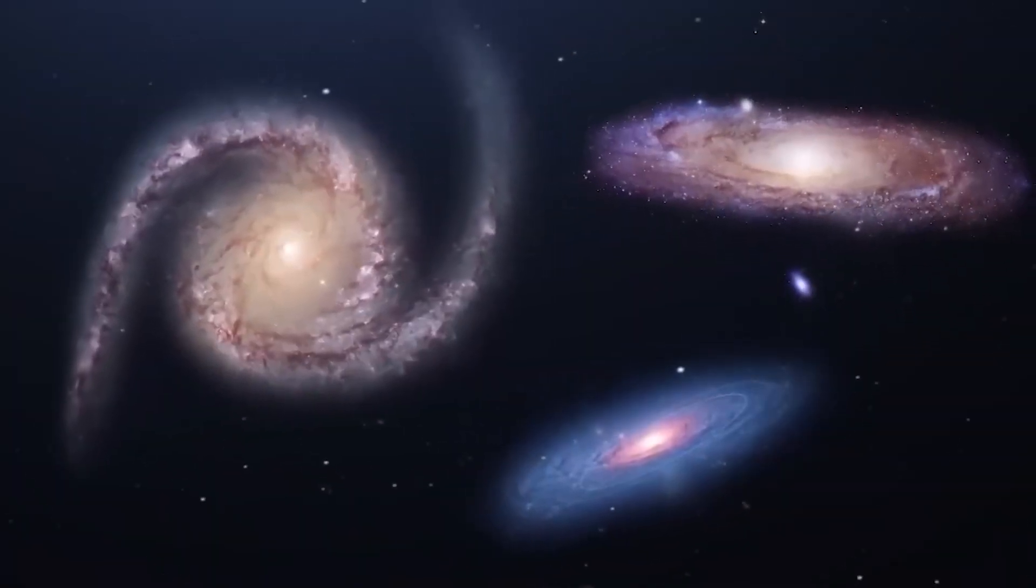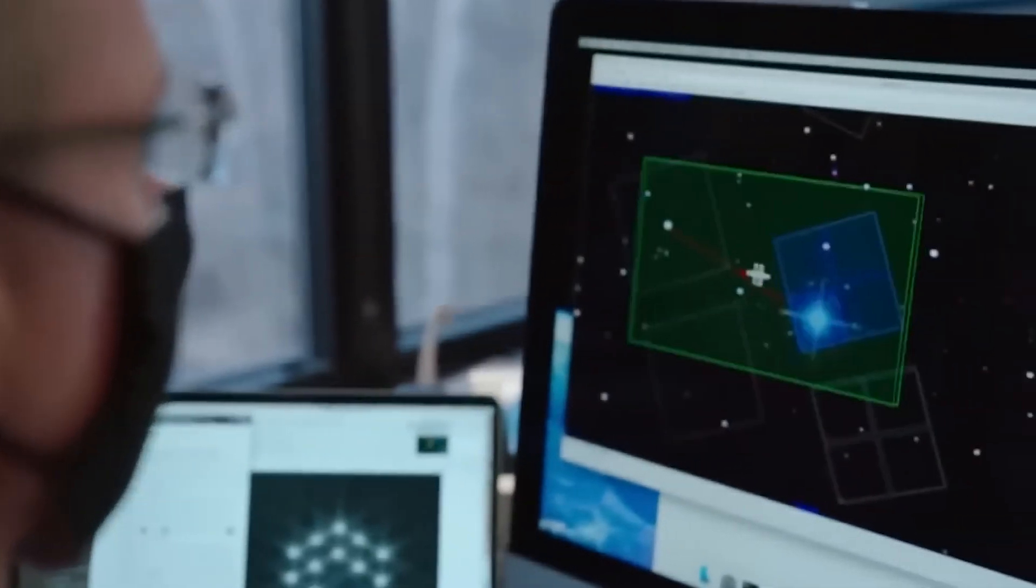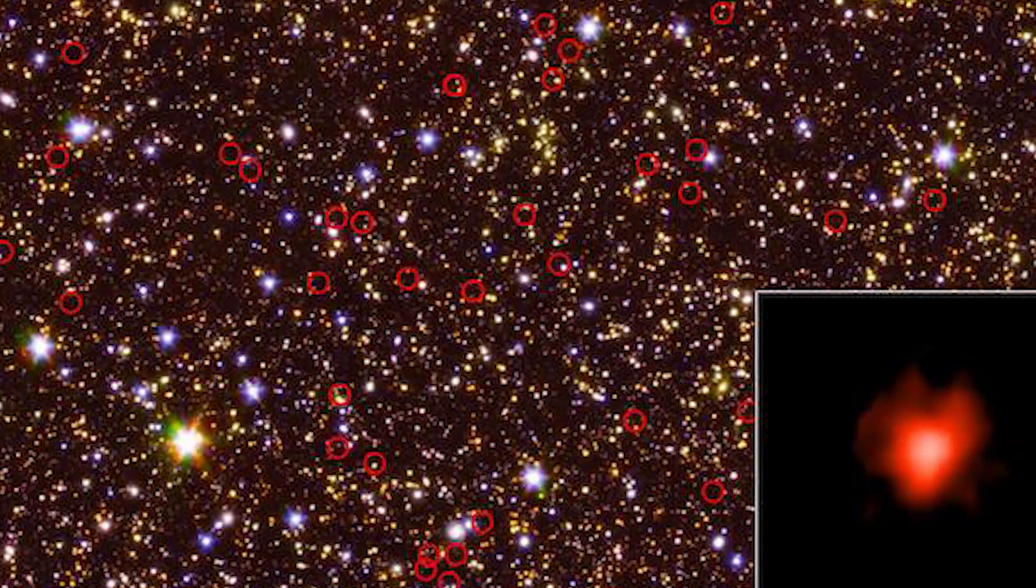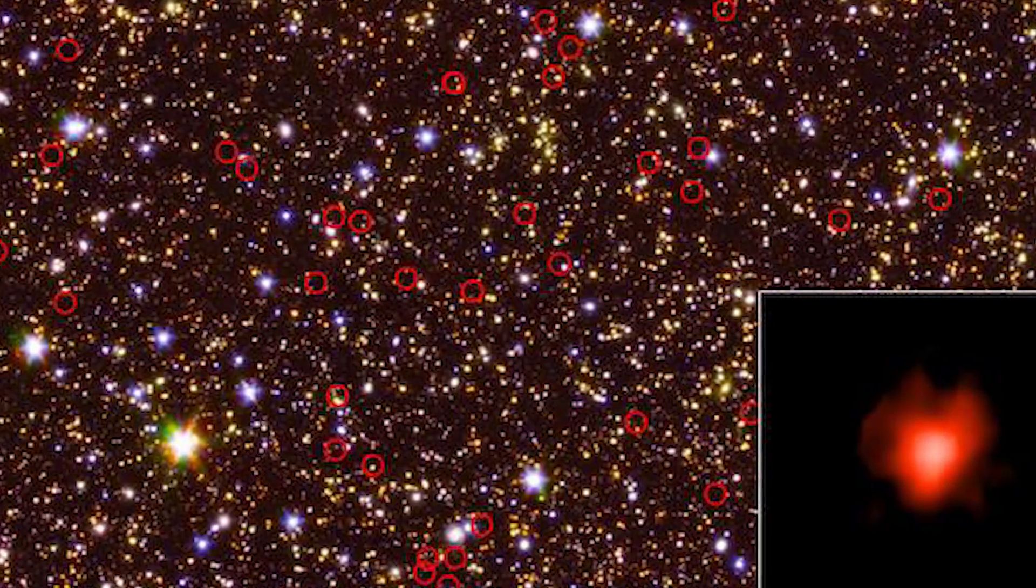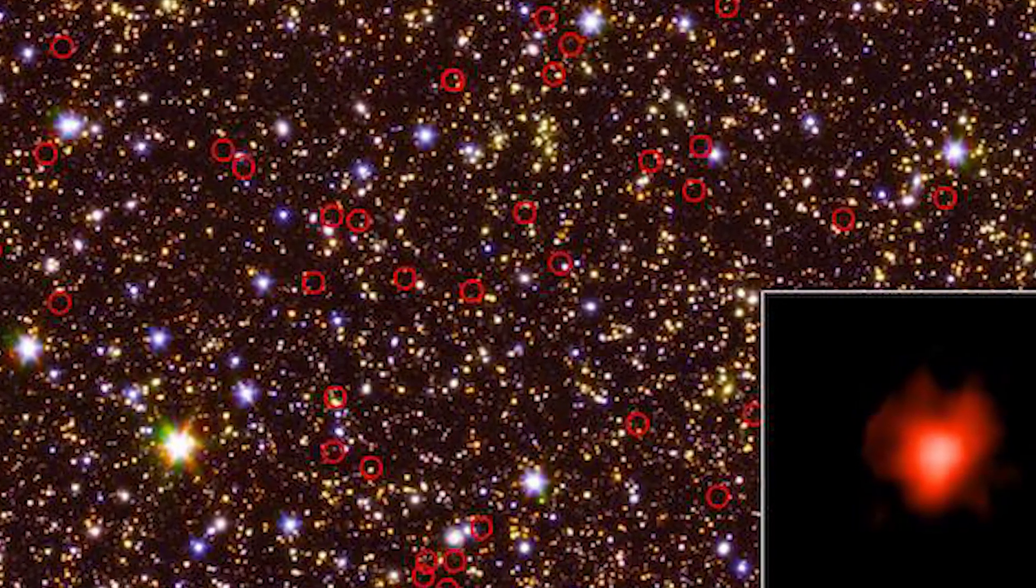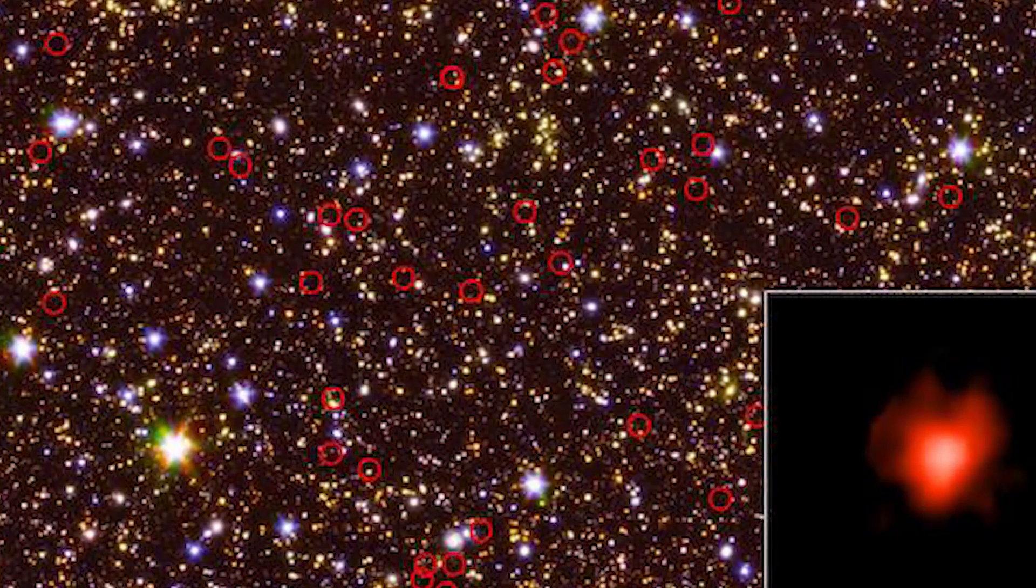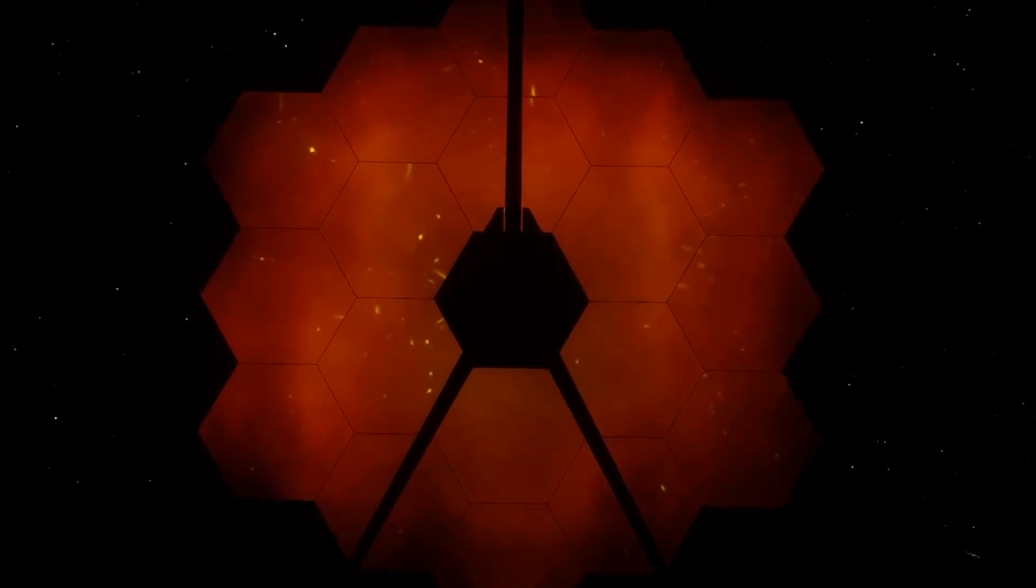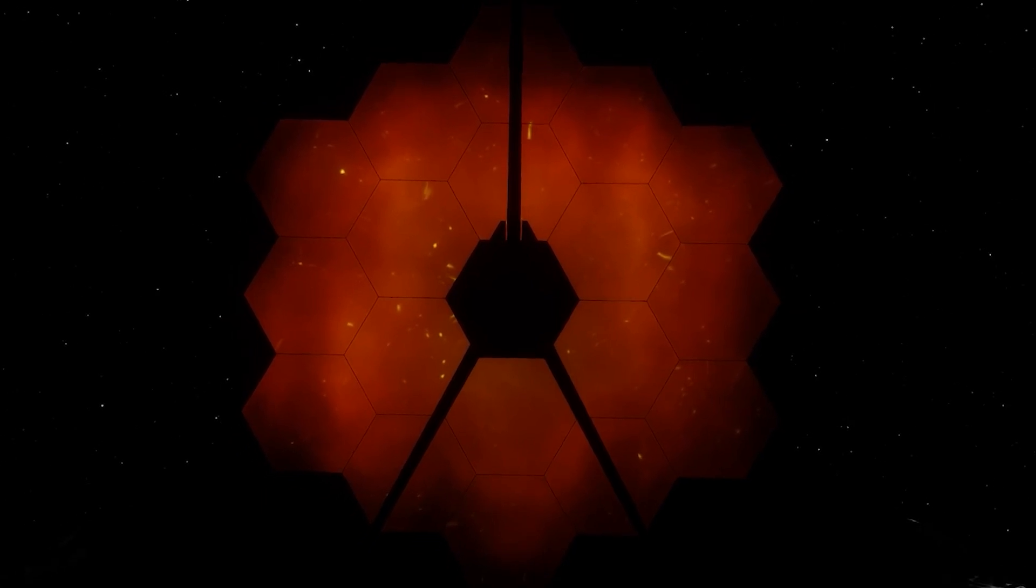Another stunning discovery stumped scientists when researchers found primordial galaxies at the edge of the universe. They were skeptical about their authenticity. Some thought they might be nearby galaxies in disguise, so they shared the data with other scientists around the world. Amazingly, the James Webb Space Telescope confirmed that these ancient galaxies are real.